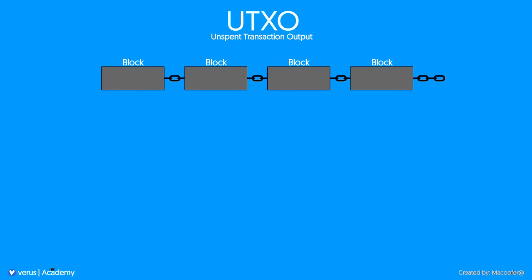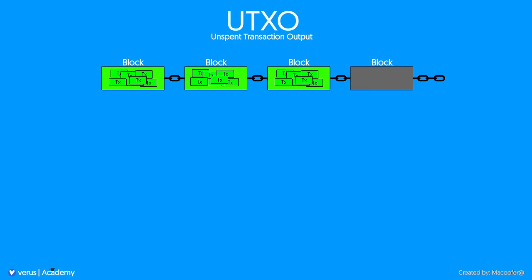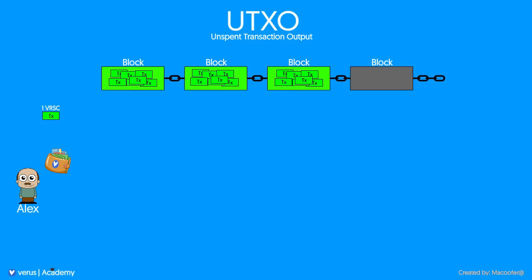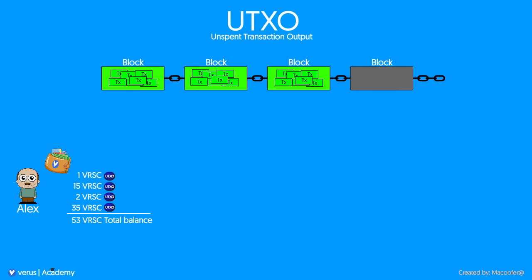Let's visualize a part of a blockchain. We fill three of them up and leave a fourth new block empty for some new transactions. This is Alex. Alex has a Verus wallet and has received 53 Verus coins so far, in four separate amounts. These four separate amounts is essentially what UTXO is all about.